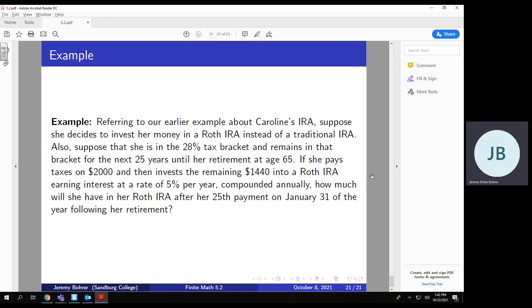suppose she decides to invest her money in a Roth IRA instead of a traditional IRA. Also, suppose that she is in the 28% tax bracket and remains in that bracket for the next 25 years until her retirement at age 65.